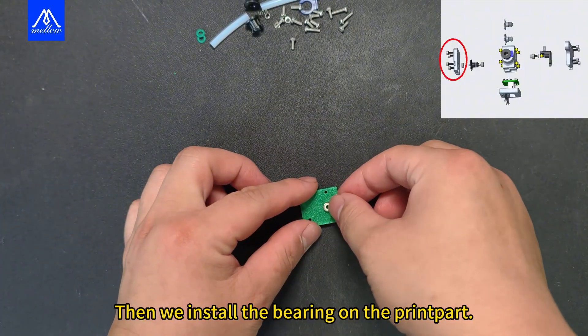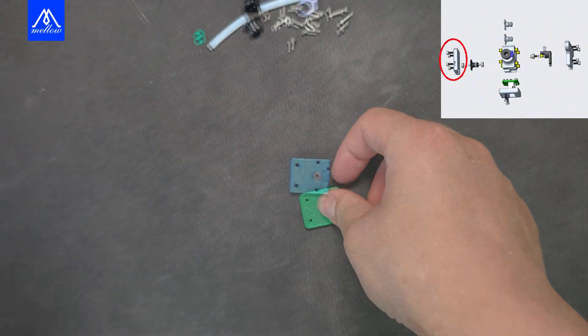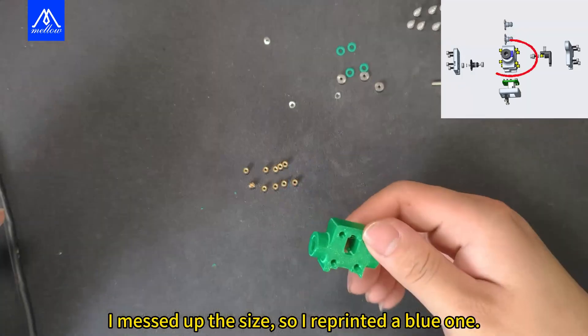Then we install the bearing on the print part. I messed up the size, so I reprinted a blue one.